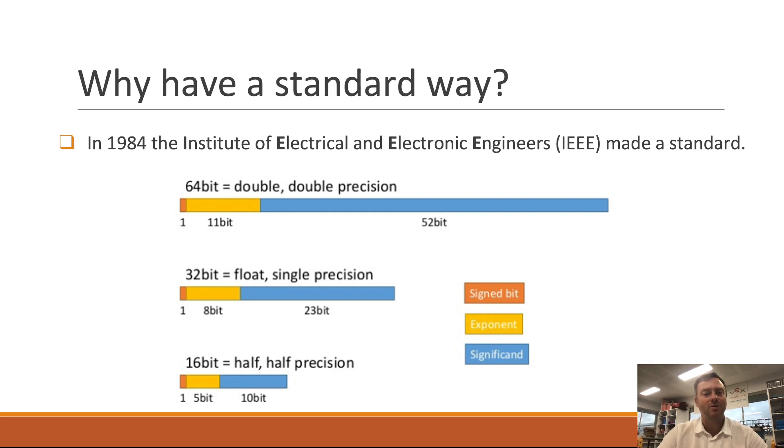They have a 16-bit, a 32-bit and a 64-bit. So this is what you might have heard as a single, a double, and then a half.